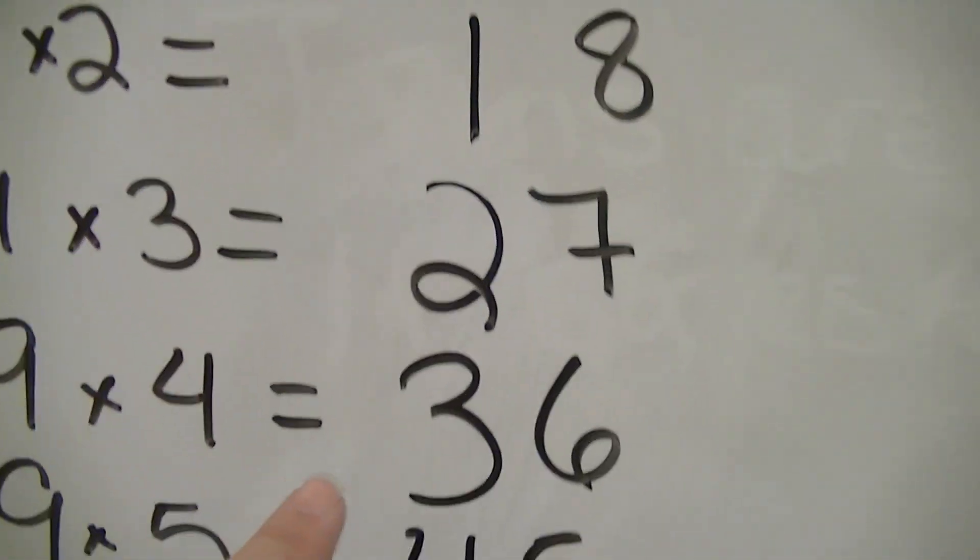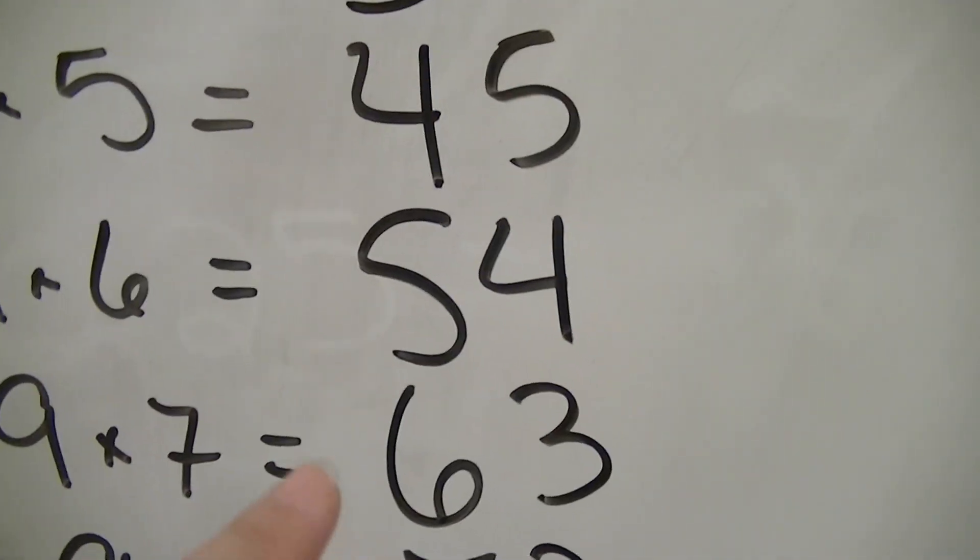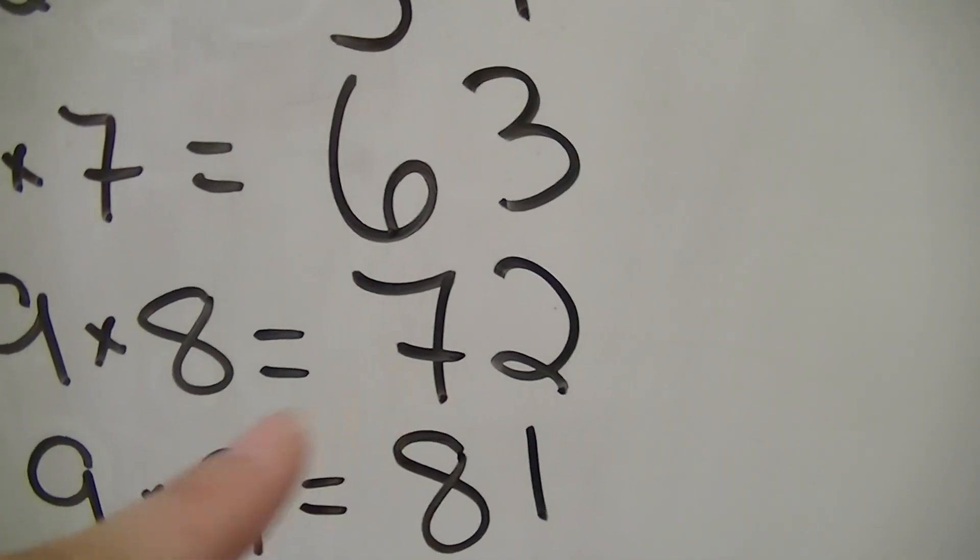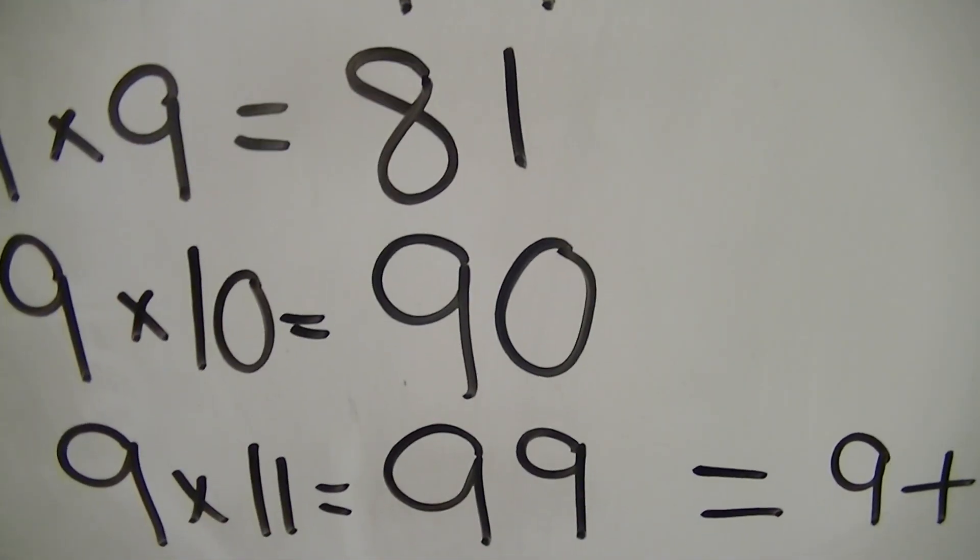What's 1 more than 3? 4. What's 1 more than 4? 5. What's 1 more than 5? 6. What's 1 more than 6? 7. What's 1 more than 7? 8. What's 1 more than 8? 9. What's 1 more than 9? 10. Now, remember, this gets tricky when you come to the 9s.